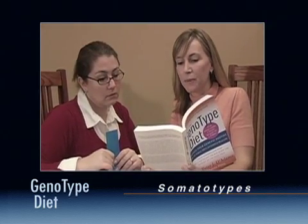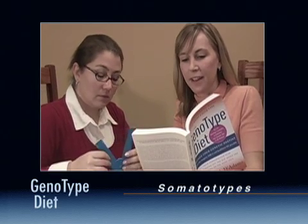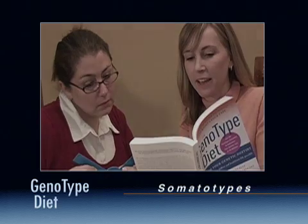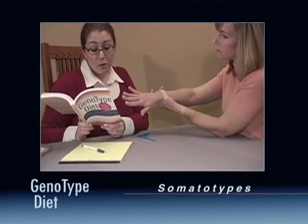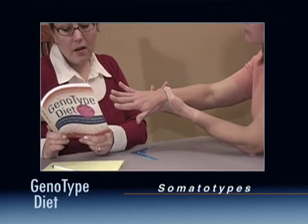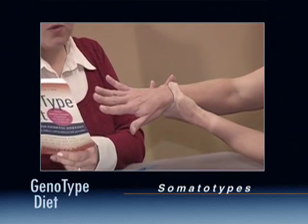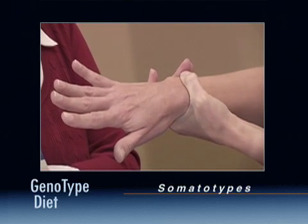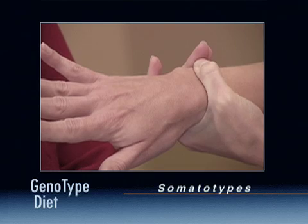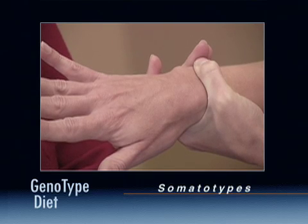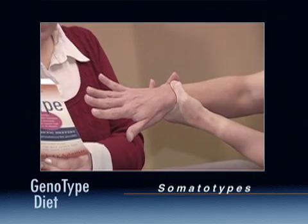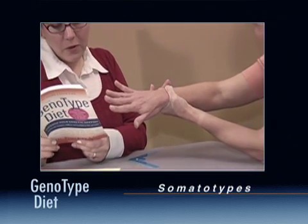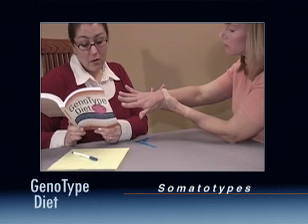Sometimes it is difficult for us to be objective about ourselves, so you may want to check your results with a friend as they may be more objective. If you are unclear about which body type best describes you, try this simple test. Circle your wrist with the thumb and middle finger of your other hand. If your middle finger and thumb do not touch, you are large framed and most likely an endomorph. If your middle finger and thumb just touch, you are almost certainly a mesomorph. If your middle finger and thumb overlap, you are small framed and most likely an ectomorph.